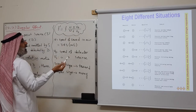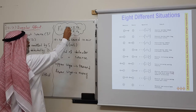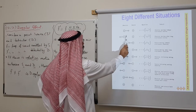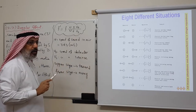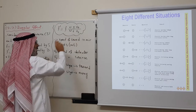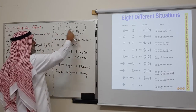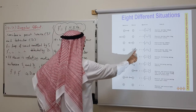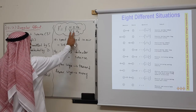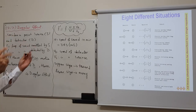If the detector is moving toward the source, pick the upper sign — which is plus in the numerator. If the detector is moving away from the source, pick the negative sign. For the source: if it is moving toward the detector, pick the upper sign — which is the negative sign in the denominator. If the source is moving away, pick the lower sign — which is the positive sign. That is how you use this equation to describe the Doppler effect.